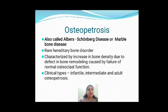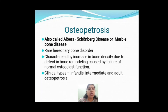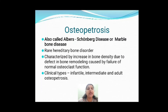The osteoclast is the cell needed for resorption of bone. Since the osteoclast is going to be defective, there is no bone resorption — only continuous bone formation. More and more bone is formed, giving the appearance of a marble-like structure, which is why this disease is called marble bone disease. There are three main types: infantile, intermediate, and adult.